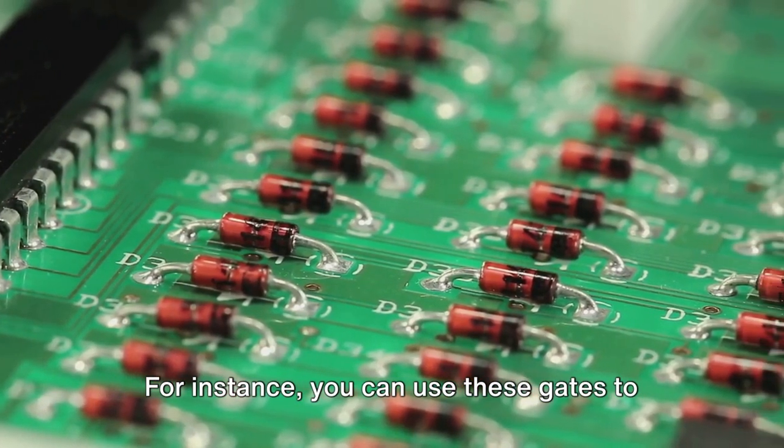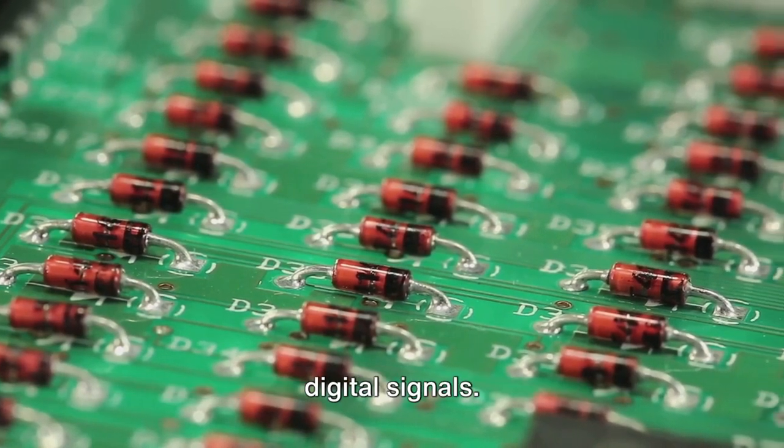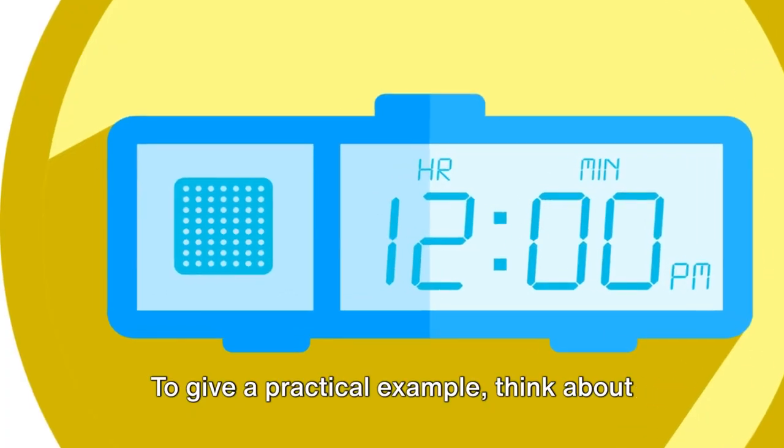For instance, you can use these gates to build adders, which can add binary numbers, or multiplexers, which can route digital signals.